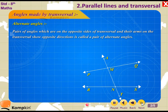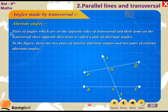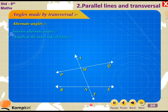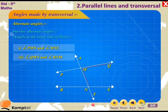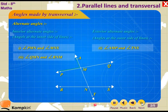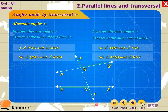Alternate angles. Pairs of angles which are on opposite sides of the transversal and whose arms on the transversal show opposite directions are called a pair of alternate angles. In the figure, there are two pairs of interior alternate angles and two pairs of exterior alternate angles. Interior alternate angles: 1. Angle PMN and angle MNS; 2. Angle QMN and angle RNM. Exterior alternate angles: Angle AMP and angle TNS; Angle AMQ and angle RNT.